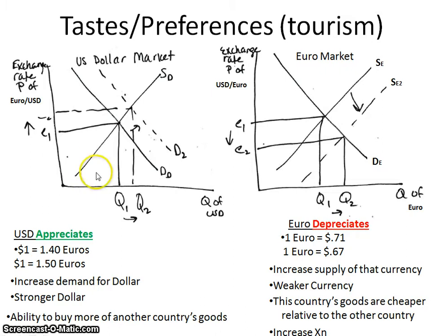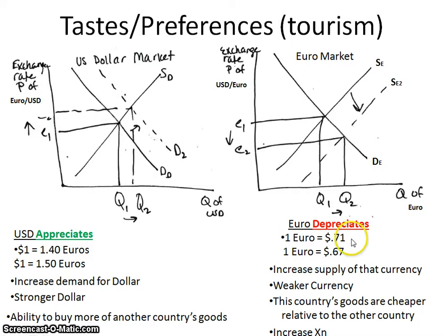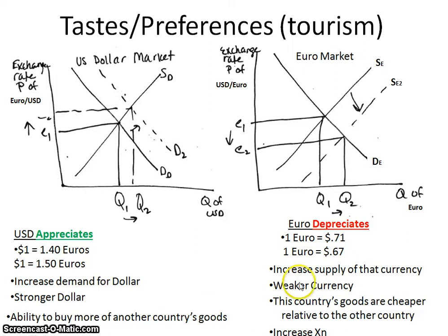When one country's currency appreciates, the other country's depreciates. In this case, they're supplying their euros to demand our dollars, and that causes a decrease in the exchange rate. For every euro, originally you could get 71 cents, but now because of the depreciation, they can only get 67 cents for every euro they pay. When they convert, they're not going to get as much of our money. This is caused by an increase in the supply of that currency.